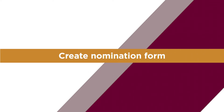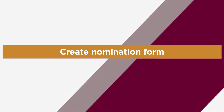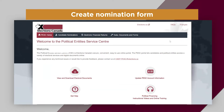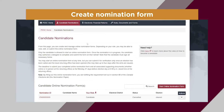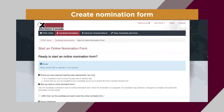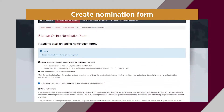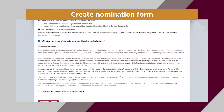To create your nomination form, go to the Candidate Nominations section. Here, you can click on Start Online Nomination Form. Affirm that you are the candidate, and confirm you've read and agreed to the Privacy Statement.